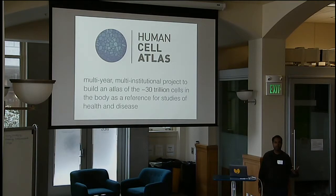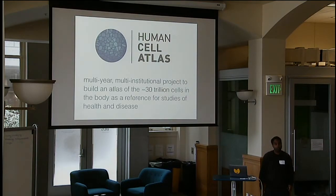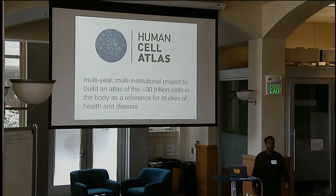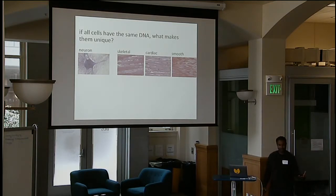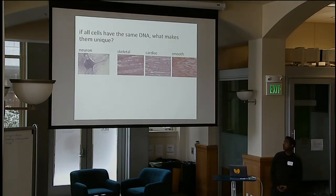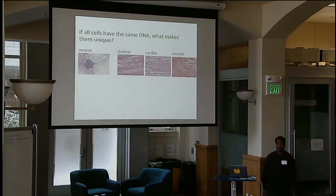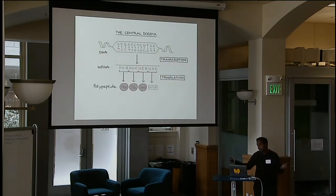Today I'll tell you about one project I'm deeply involved in — the Human Cell Atlas project. You can think of it as the spiritual successor to the Human Genome Project. The idea is to profile the order of 30 trillion cells in the human body across a diverse set of people. The basic underlying biology question is: if all cells have the same DNA, what makes them different? Here I'm showing you four kinds of cells: neuron, skeletal cells, cardiac cells, and smooth muscle cells.